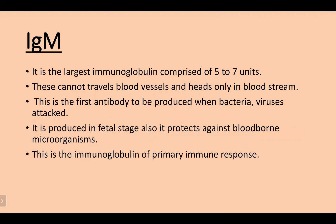IgM is the largest immunoglobulin, with a pentameric and multimeric structure comprising five to seven units. It cannot travel outside blood vessels and stays only in the bloodstream. It is the first antibody to be produced when bacteria or viruses attack the body. IgM is produced in the fetal stage and protects against blood-borne microorganisms. It is the immunoglobulin of the primary immune response.